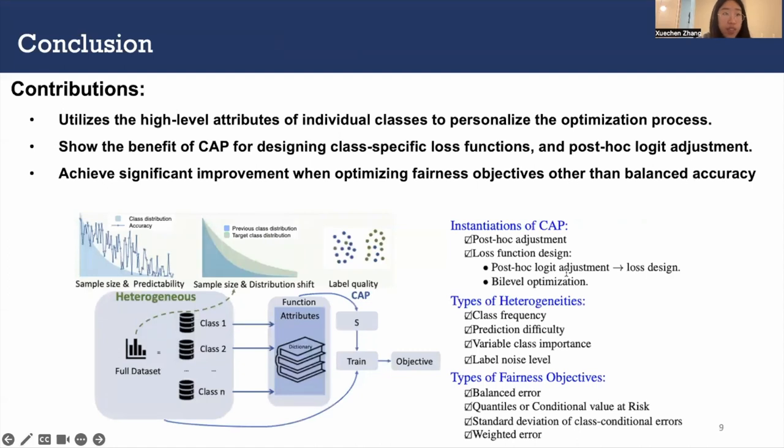So to summarize, those are our contributions. We utilize the high-level attributes of individual classes to personalize the optimization process. Also, we show the benefits of CAP for designing class specific loss functions and post-hoc logit adjustment. Still, we achieve significant improvement when optimizing fairness objectives other than balanced accuracy.